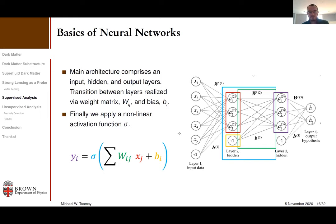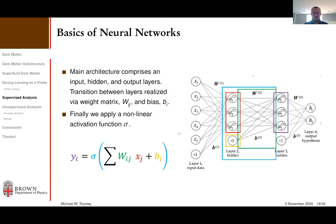Since I'm going in the direction of how we implemented this method of identifying dark matter based on substructure using machine learning, I should get into some basics of neural networks. The basic type of machine learning we're using is based on neural networks. The basic structure is a series of nodes corresponding to layers, with weights connecting between layers. You have an input layer — in this case a strong lensing image — then hidden layers, then an output layer. Going from one layer to the next involves multiplying by a weight matrix.